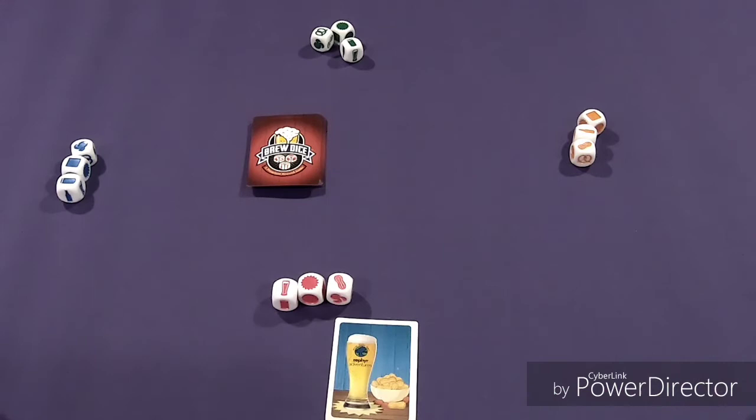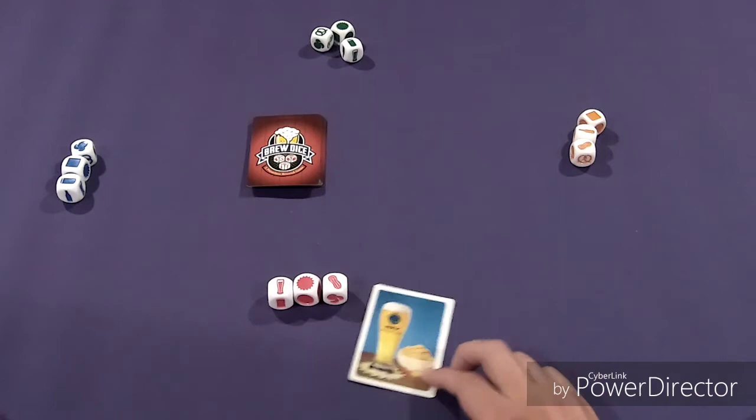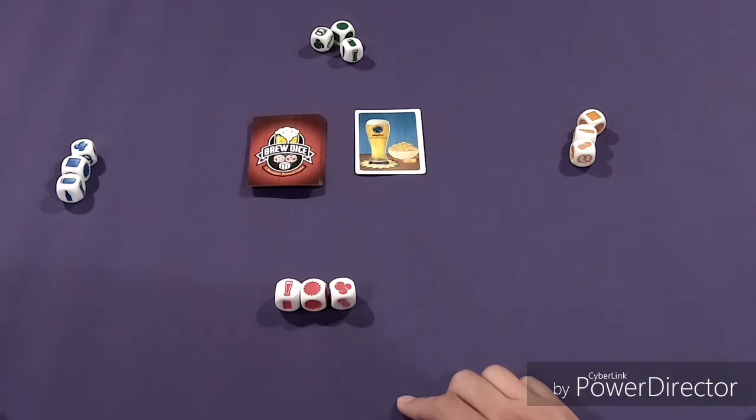If you roll what is required on the card in your first roll, there's an advanced rule where you could take that card and a card from another player. If I rolled this and then said that it was mine, that I got it or I claimed it.